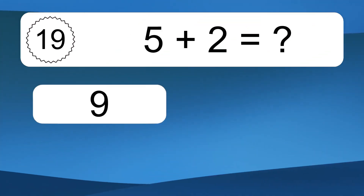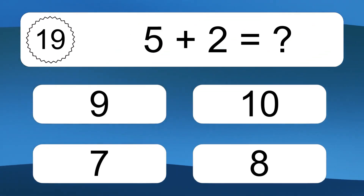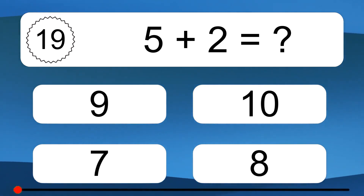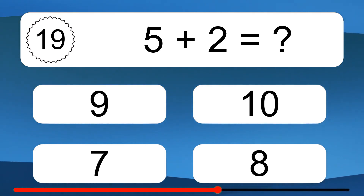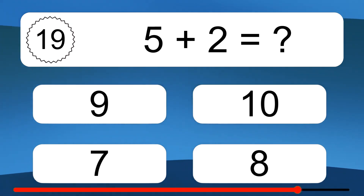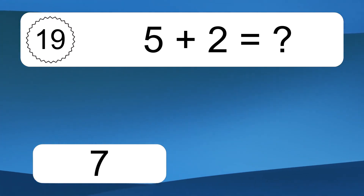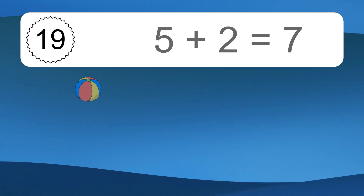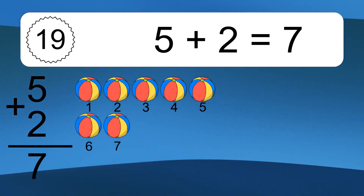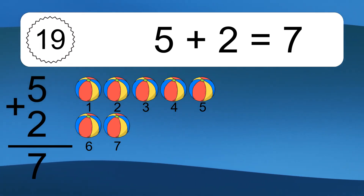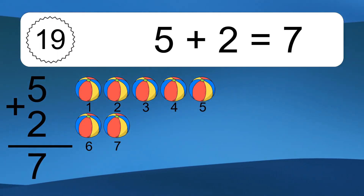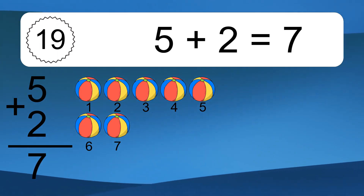5 plus 2 equals what? 5 plus 2 equals 7. Let's count it. 1, 2, 3, 4, 5, 6, 7.